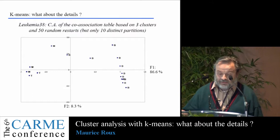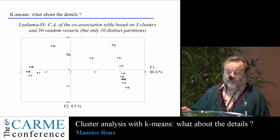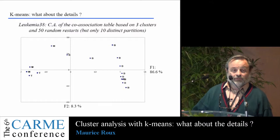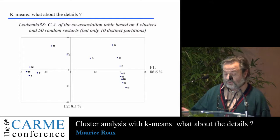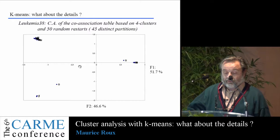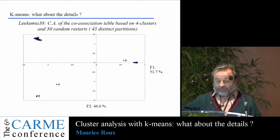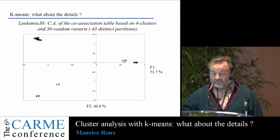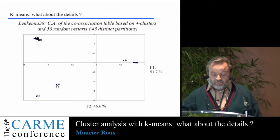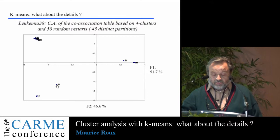This was done with three-cluster K-means analysis. I repeated the analysis asking for three clusters with 50 random restarts, but at the end there were only 10 distinct partitions. Then I repeated the same analysis asking for four clusters — again 50 random restarts — and we obtained 45 distinct partitions. The three groups are well visible here, but again there is a point B far from its own group, and another point B very close to the group of T.